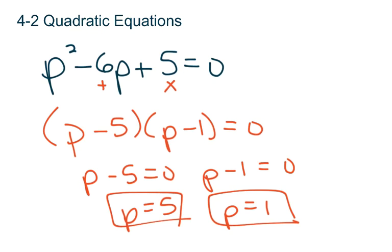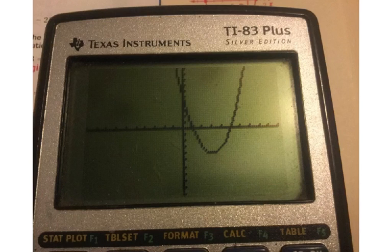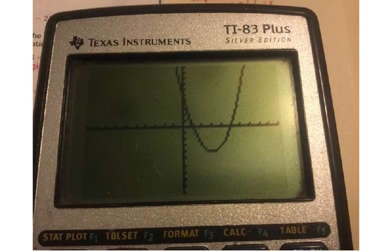Another way you may not have learned is that when you have any polynomial, but specifically quadratics, as long as the solutions are real, you can graph this on your calculator and look for where it hits the x-axis. When I look at the graph of this, it hits the x-axis at 1 and 5.